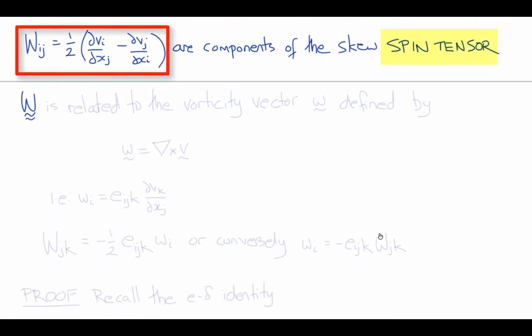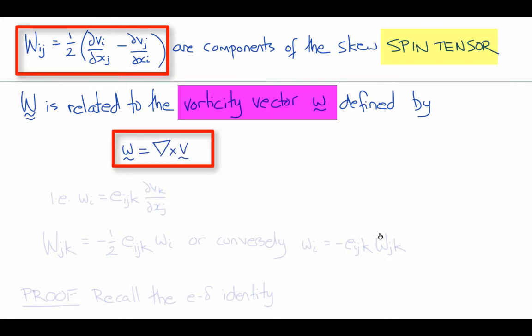The spin tensor w is related to another useful quantity called the vorticity vector, lowercase w, which is defined by the curl of the velocity vector. So w is equal to curl v.